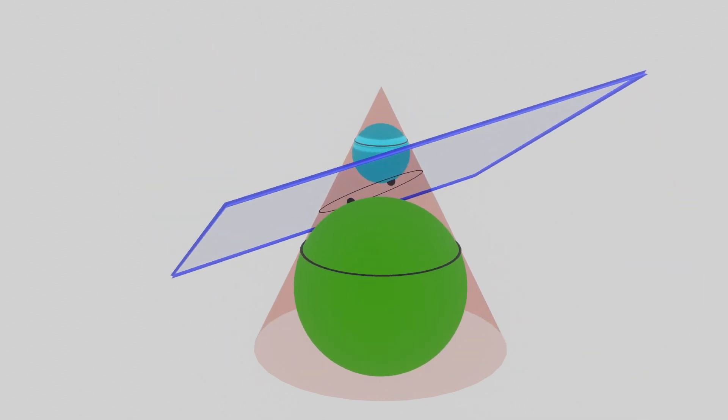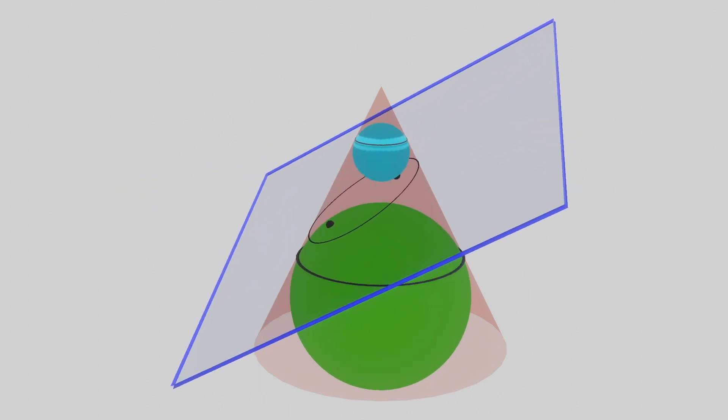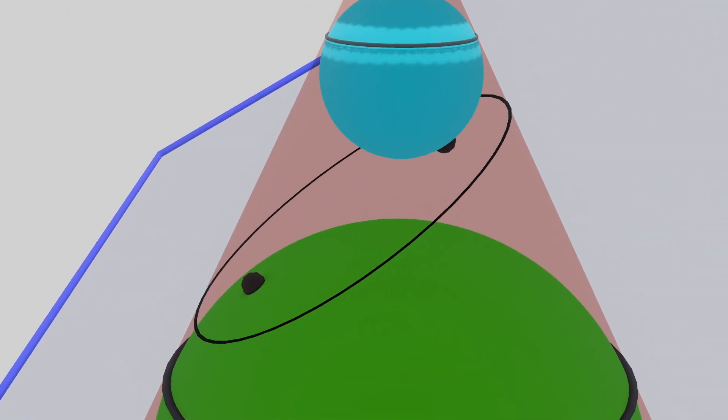A reasonable guess we could make at this point would be that the two points on the plane where the spheres are tangent to it are the foci. Let's show that this is actually the case.